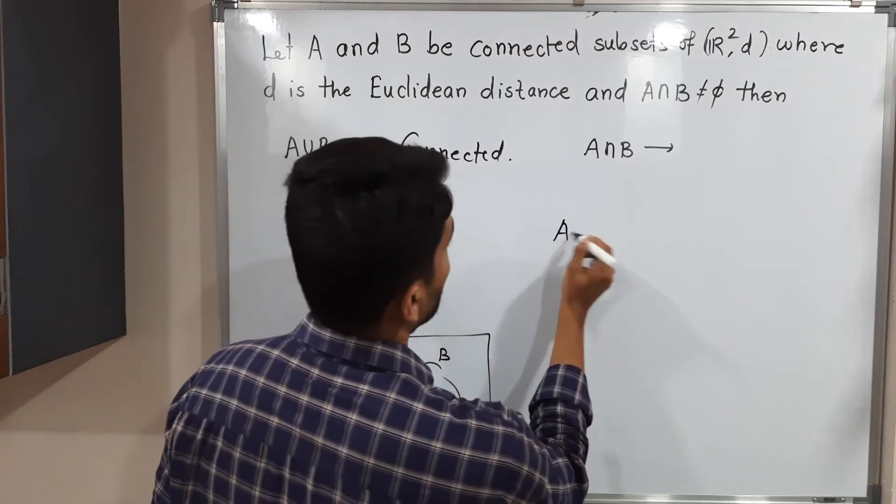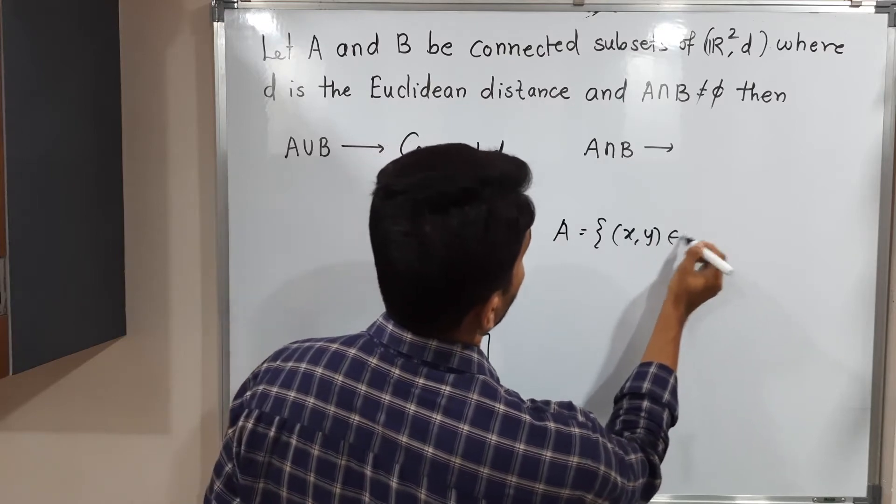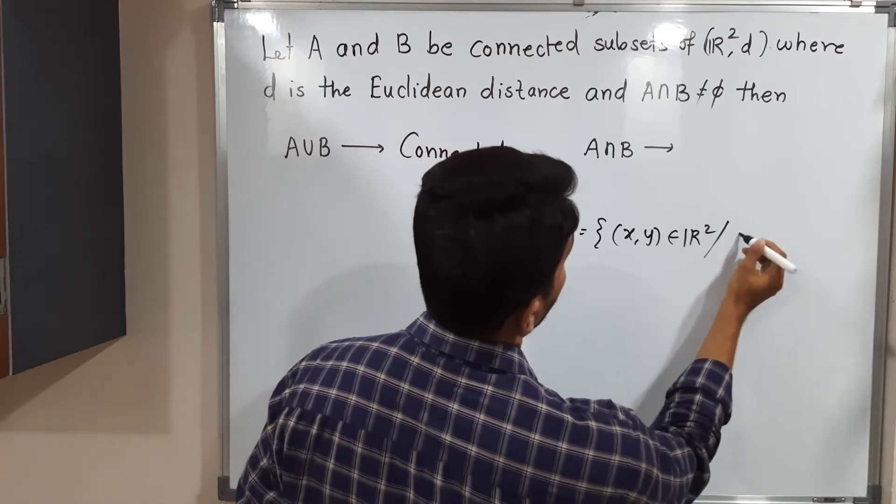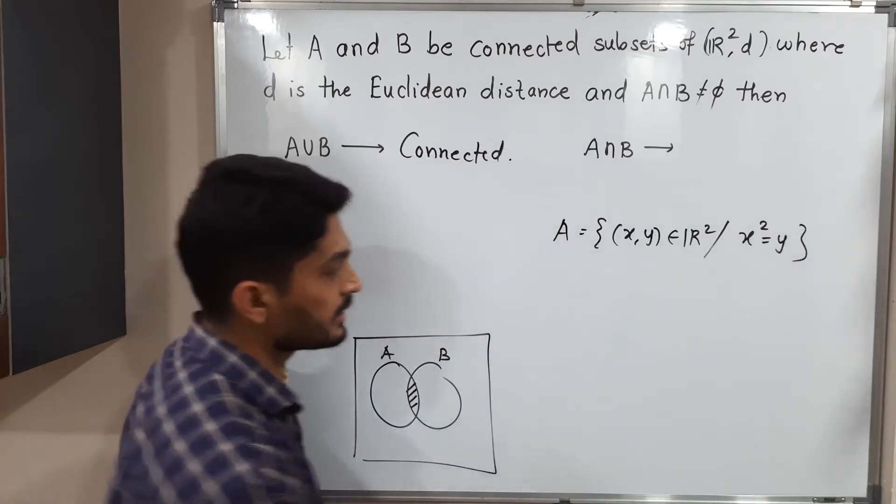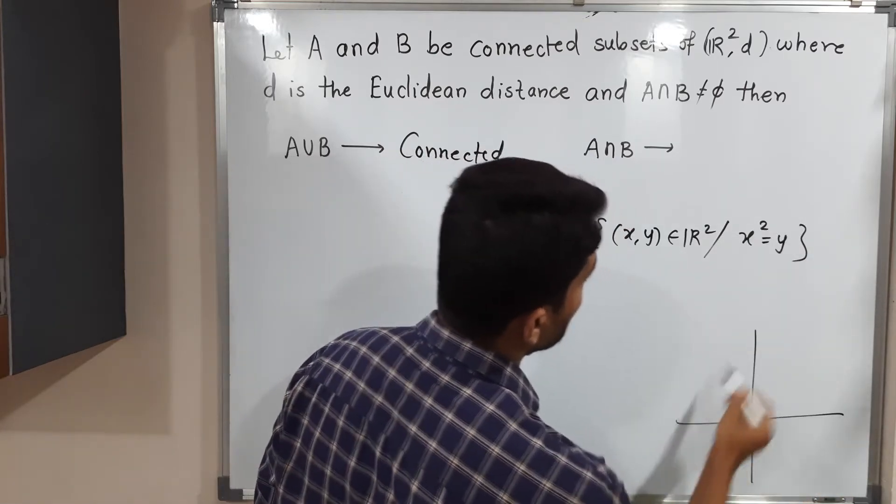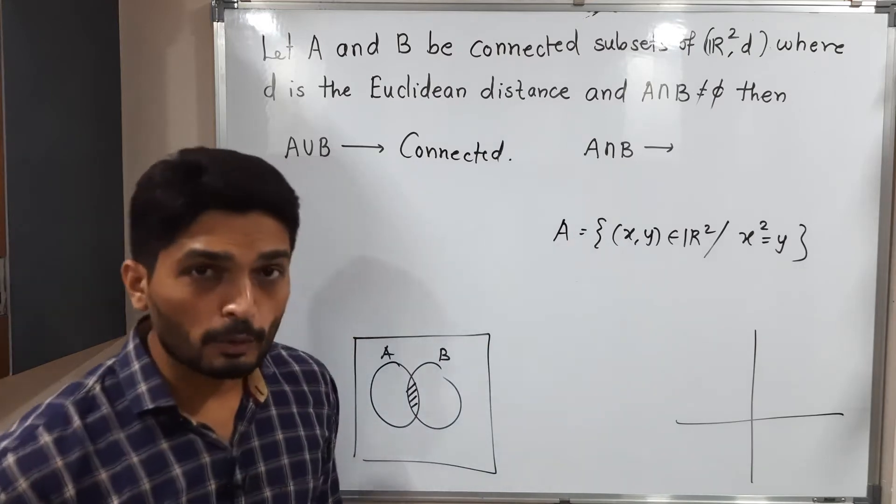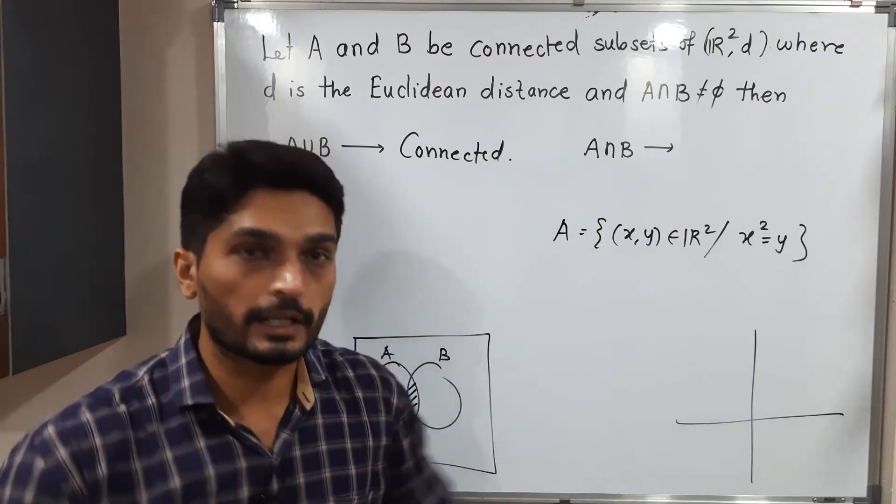Consider a set A, which is a subset of R². (x,y) belongs to R² such that x² = y. I will draw the diagram so you can easily understand. So x² = y - this is the equation of a parabola symmetric about the Y axis and opens in upward direction.